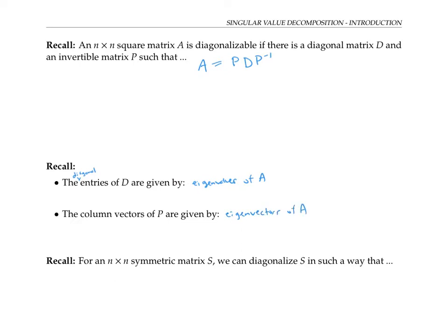One more fact to recall: if we start with an n by n symmetric matrix S, then we can diagonalize S in such a way that the matrix P is an orthogonal matrix.